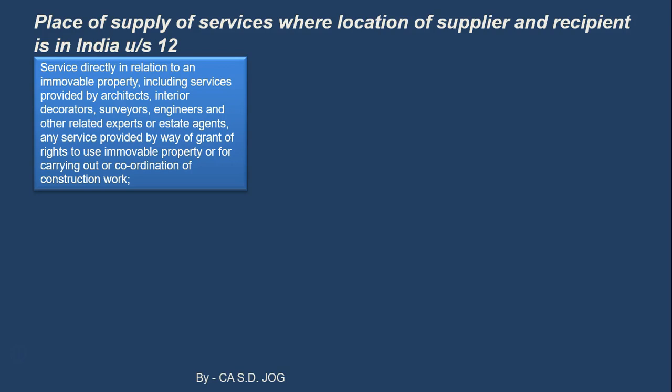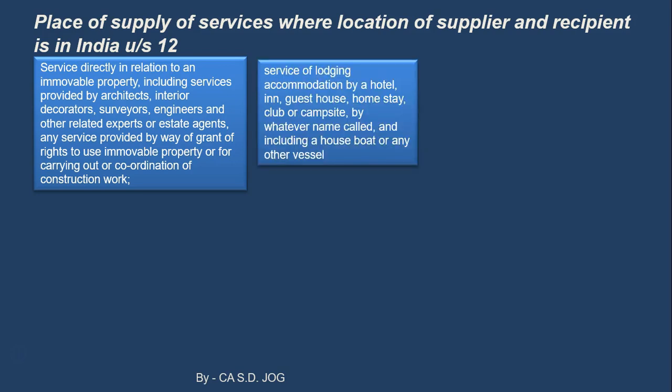We will see the place of supply — it is very logical and very simple. The second case is services of lodging accommodation by a hotel, guesthouse, homestay, club, campsite, by whatever name called, including a houseboat or any other vessel. So a service of lodging or accommodation provided in any hotel, guesthouse, or even a cruise service is covered. What will be the place of supply of this service?